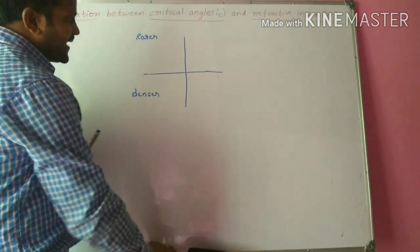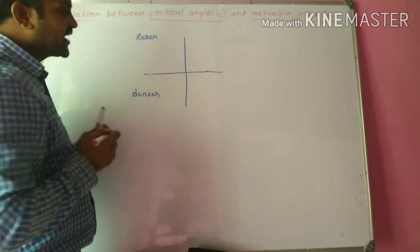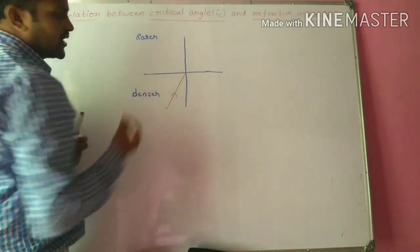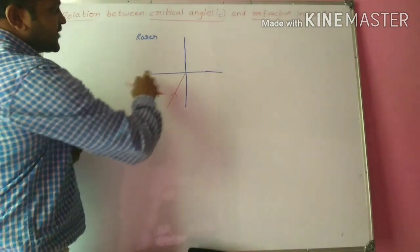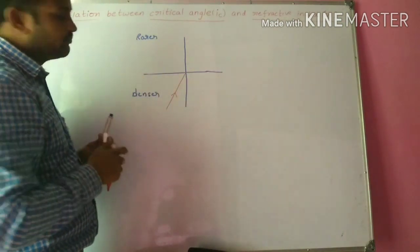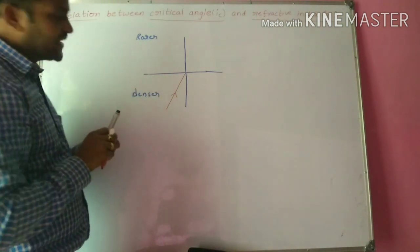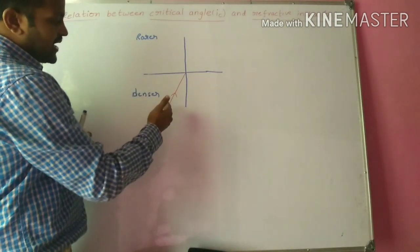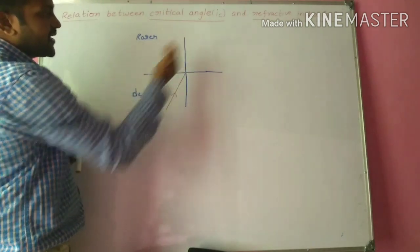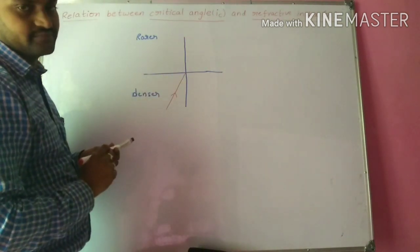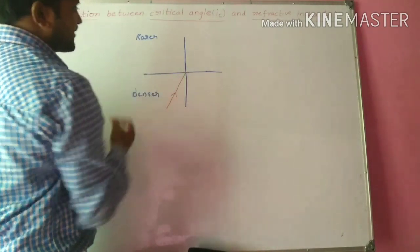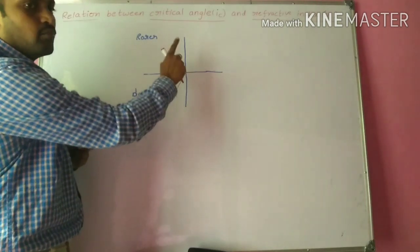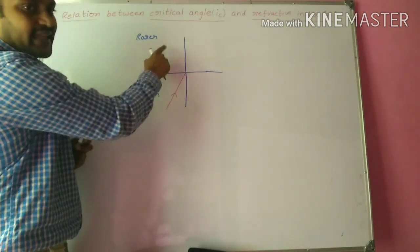Whenever a light ray travels from denser medium to rarer medium — this is the incident ray — when the incident ray hits the interface between rarer medium and denser medium, generally the light ray undergoes refraction because when it travels from one medium to another medium it changes its path. Whenever the light ray travels from denser medium to rarer medium, the light ray moves away from the normal in the rarer medium.